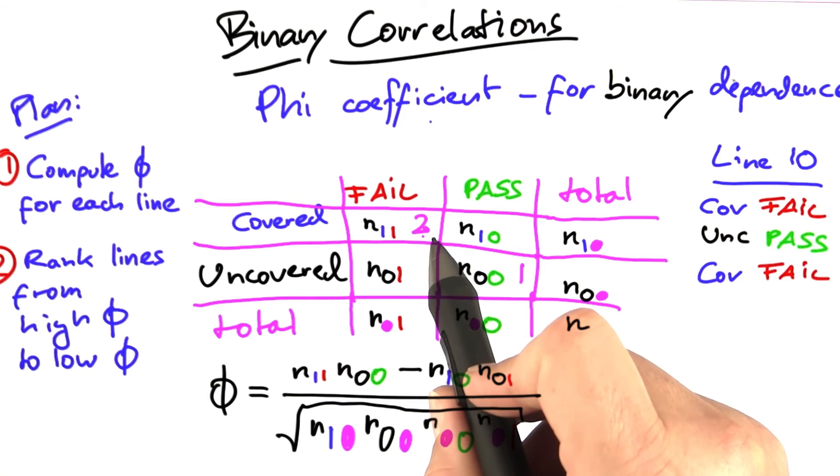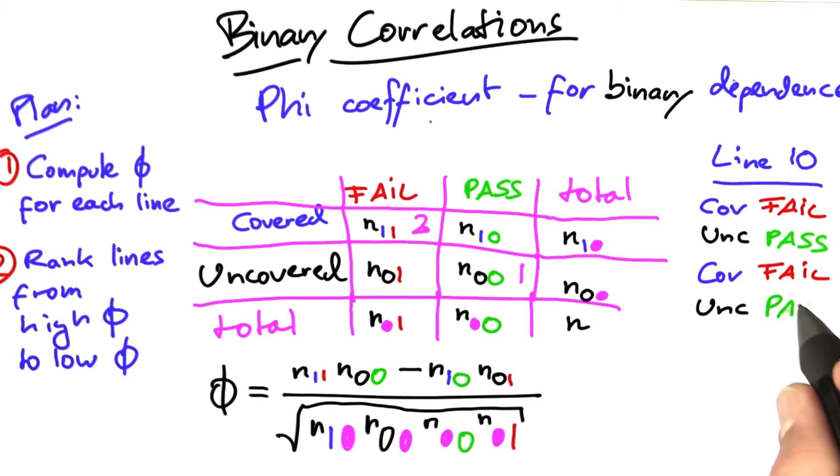Next thing we see, it's covered, and it fails. So, the value in our table becomes 2. And then again, we see uncovered, and it passes. So, now we have seen two instances of the line being uncovered and passing.